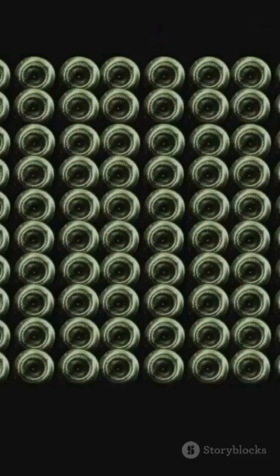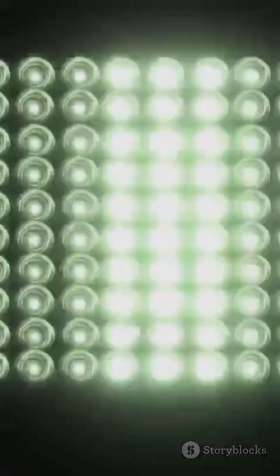Every single pixel in your phone's camera has a photodiode. Millions of them, working together to capture light, shape images, and store memories.